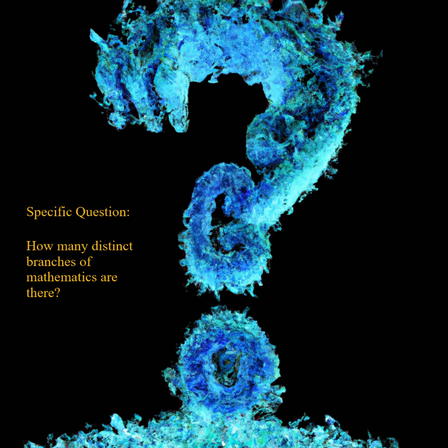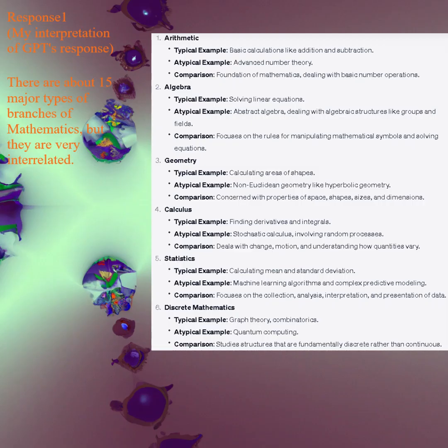Question: How many distinct branches of mathematics are there? Response 1. My interpretation of GPT's response: there are about 15 major types of branches of mathematics, but they are very interrelated.